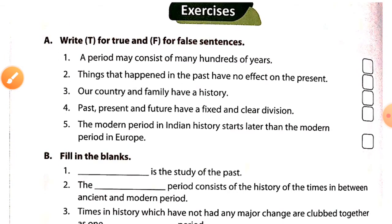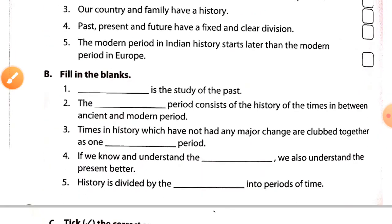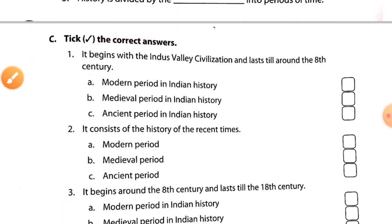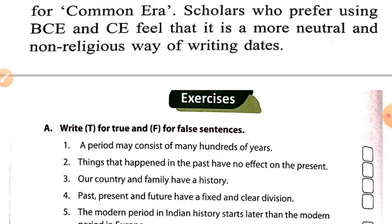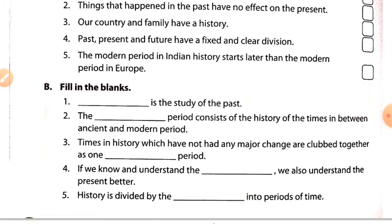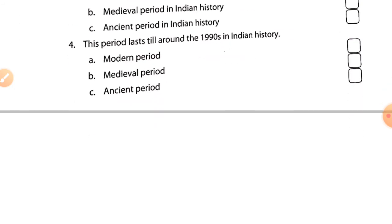Next, it is your exercise — you will find it in your books. If you don't have your books yet, you can also do it from here by taking a screenshot on your mobile. Complete sections A to C as your homework. This lesson is very small so you can do it easily. If you have any doubt, you can ask me — you can phone me. For today, thank you.